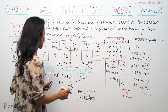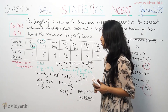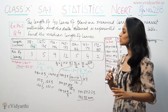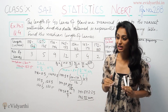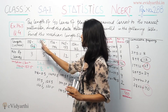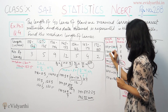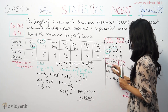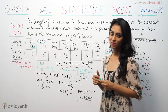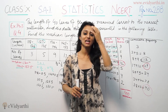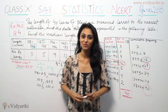So 146.75 millimeters is the median length of the pieces. Generally, if your data is not continuous, you need to adjust by subtracting 0.5 from the lower limit and adding 0.5 to the upper limit, so that the upper limit of one class matches the lower limit of the next class — that is what continuous data means. This was one question from exercise 14.3. If you have any doubts, please write to us in the comments and subscribe. Goodbye.